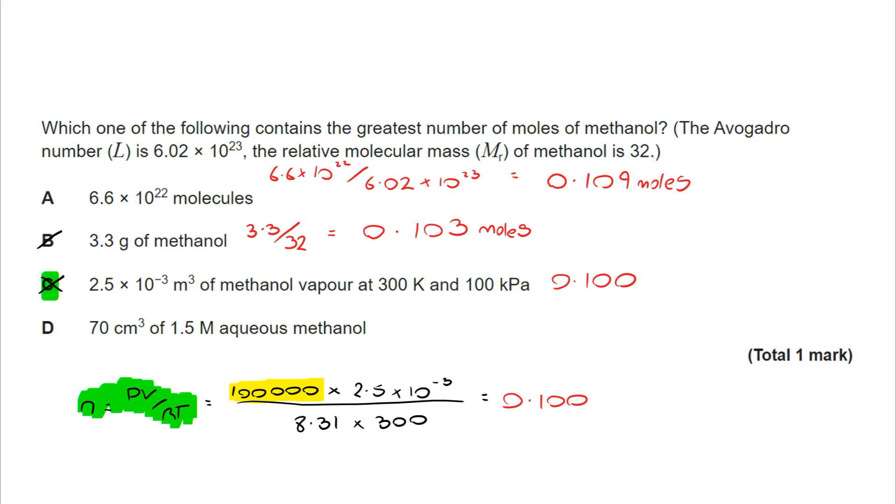And then I move on to D, where I have a volume and I have a concentration. So my volume, I'm converting to decimetres cubed by dividing by 1,000, I'm multiplying by the concentration, and I get 0.105 moles. So the highest of all four of them is A.